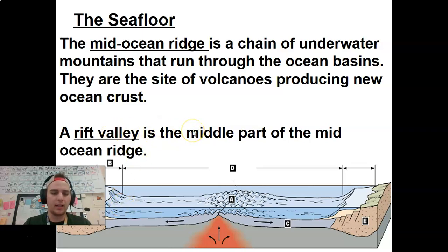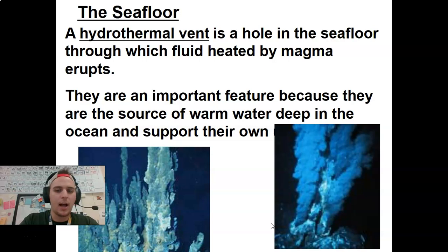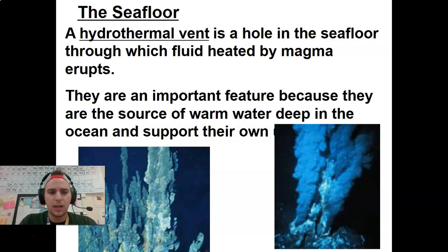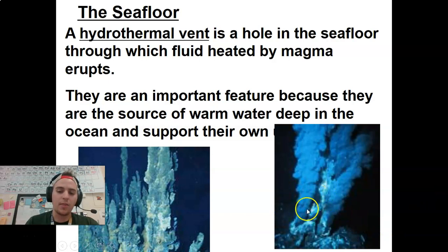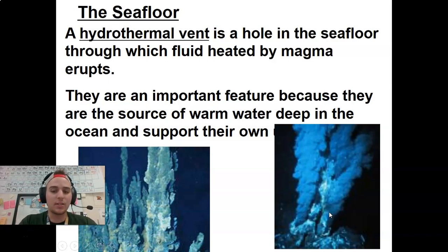The Rift Valley is the middle part of the mid-ocean ridge. Hydrothermal vents are holes in the seafloor through which fluid heated by magma erupts. They're a really important feature because they're the source of warm water deep in the ocean and they support their own ecosystems. There are actually organisms that don't do photosynthesis but instead do chemosynthesis, using the chemicals spewing from these vents at the bottom of the ocean. You can actually have entire ecosystems built on these hydrothermal vents without any access to sunlight whatsoever.